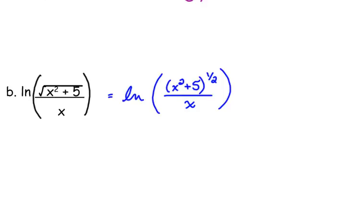I cannot take the square root of x squared plus the square root of 5 — that is not how that simplifies. So all I'm going to do is rewrite the square root as the one-half power, because I'm going to need to simplify that later.